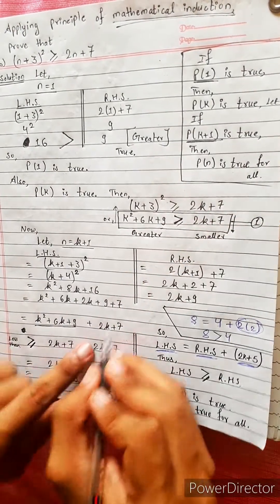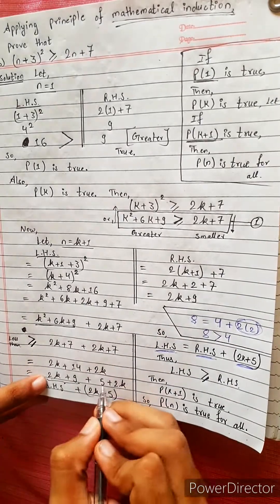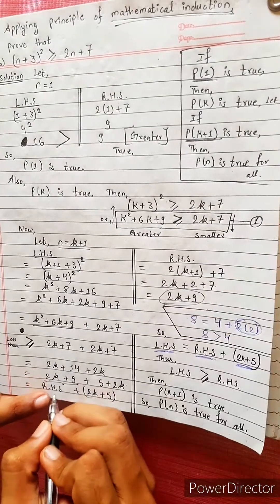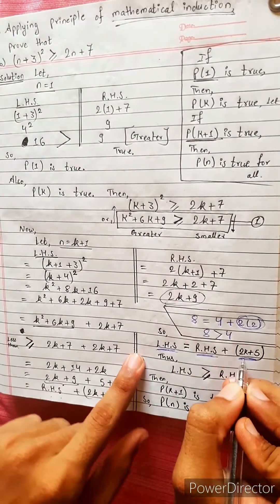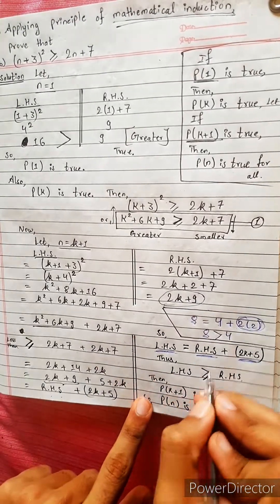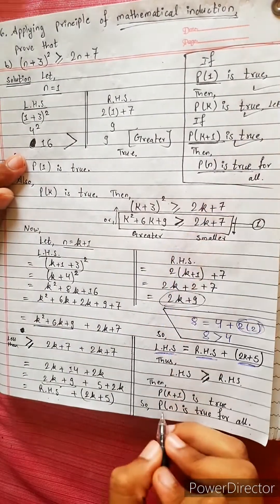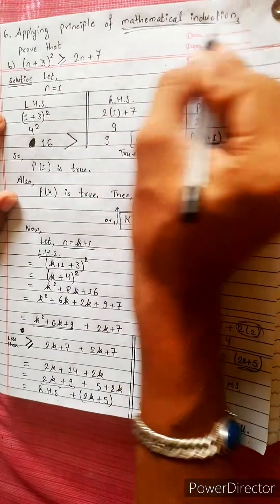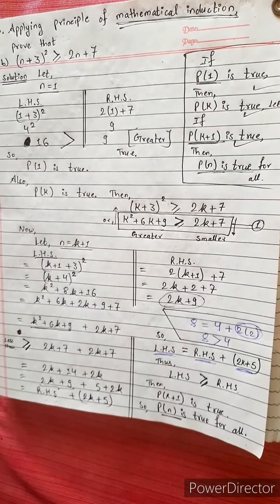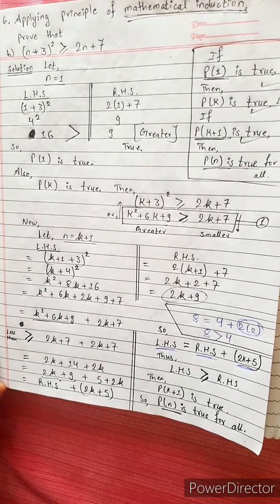2k plus 7 is equal to RHS plus something. LHS equals RHS plus something — this is true. This is the mathematical induction statement. Bye-bye. Thank you.